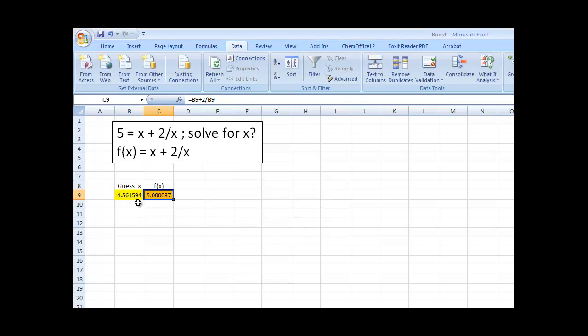And so, what's the value? Well, x is equal to 4.561594 when f of x is equal to 5 or y is equal to 5. Or, I should say, f of x is equal to 5. So, that's the solution for this problem up here.